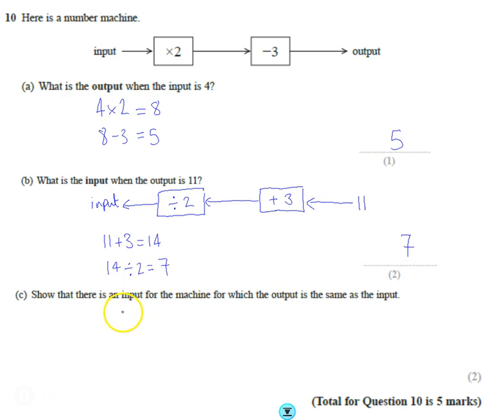Show that there is an input for the machine where the output will be the same. Well, you can try different numbers, but you can think a little bit. If you're going to double it and then take off 3, and you want to get back to the beginning, then you must be on something you doubled, that when you take off 3, it gets back to the beginning. So take off 3, if we put 3 in, let's try it.